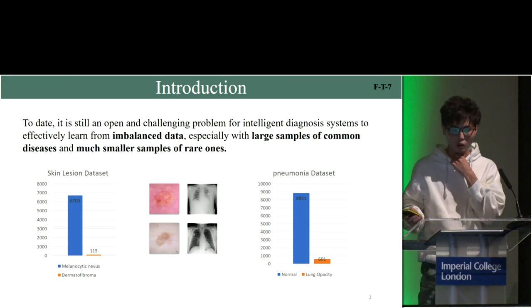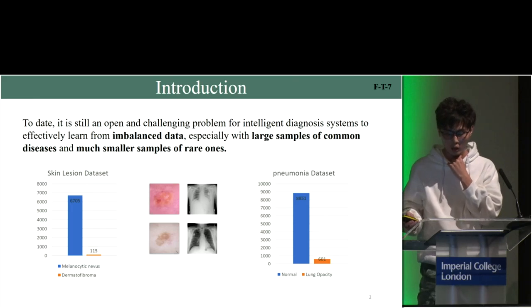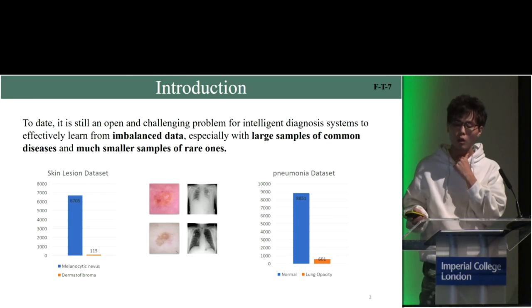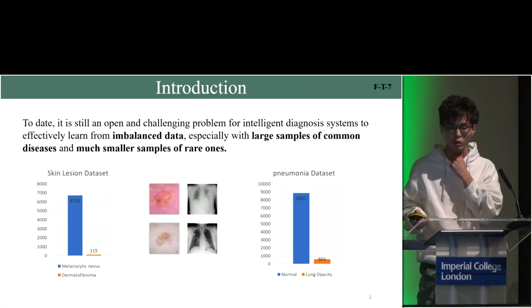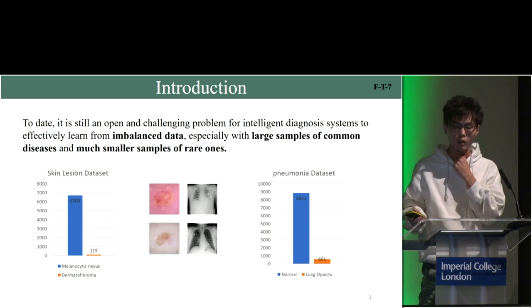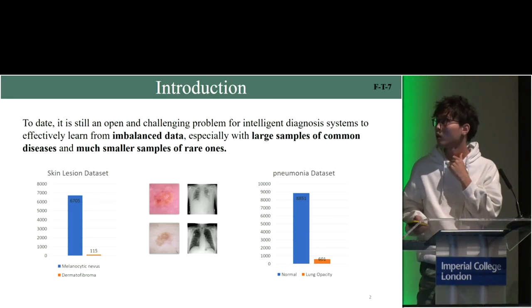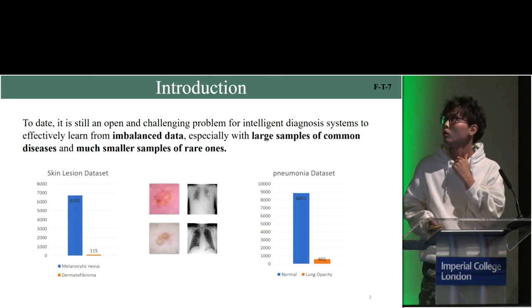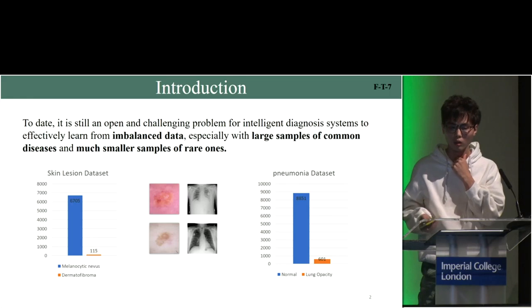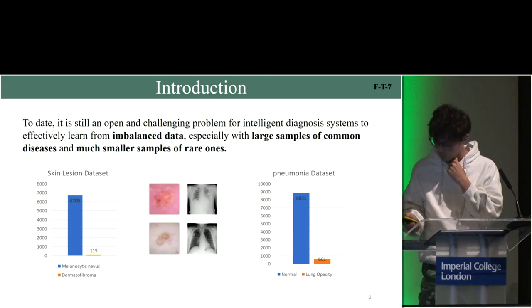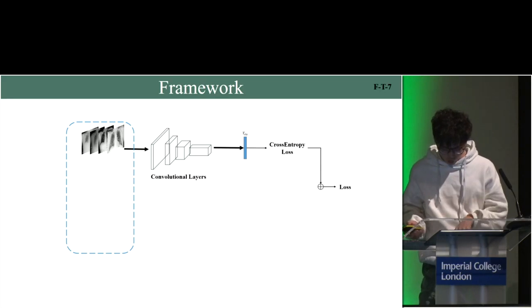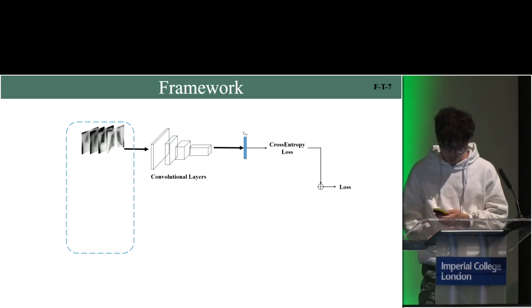We have two datasets. The first is the skin lesion dataset where the most common disease has 6,705 images while the rarest disease has only 115 images. The other dataset is the pneumonia dataset which has similar characteristics as the skin lesion dataset.